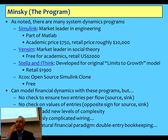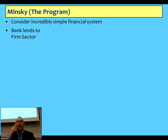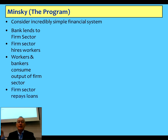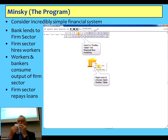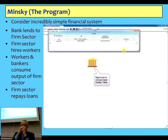Whereas in Minsky I use the natural paradigm of double entry bookkeeping. To compare those for you, here's a simple model: banks lend to the firm sector, the firm sector hires workers, workers and bankers consume the output of the firm sector, and the firm sector repays its loans. Pretty simple. Let's watch that being built in Minsky.